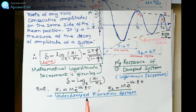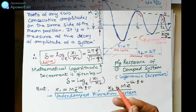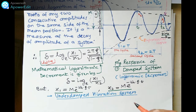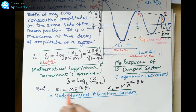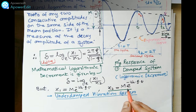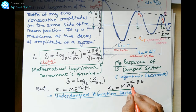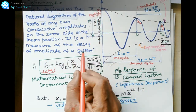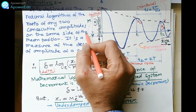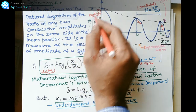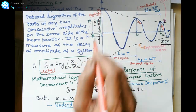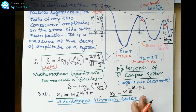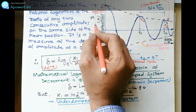For an under-damped vibration system — which we have studied previously — x1 = M·e^(−ωn·ζ·t1) and similarly x2 = M·e^(−ωn·ζ·t2), where M is the maximum amplitude. The dotted line represents the value of M on both sides of the motion diagram.